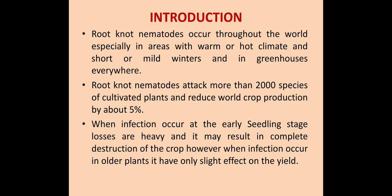Root knot nematodes is a common name given to all species of Melidogyn genus. These root knot nematodes occur throughout the world, especially in areas with warm or hot climate and mild winters. They also occur in greenhouses everywhere. These root knot nematodes attack more than 2,000 species of plants, including all cultivated plants, and reduce world crop production by about 5%.